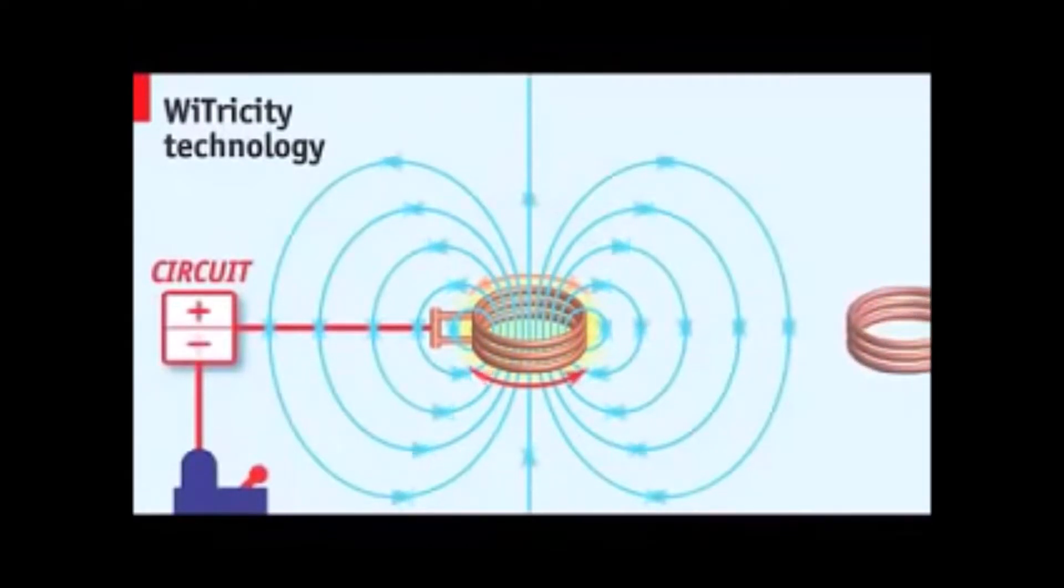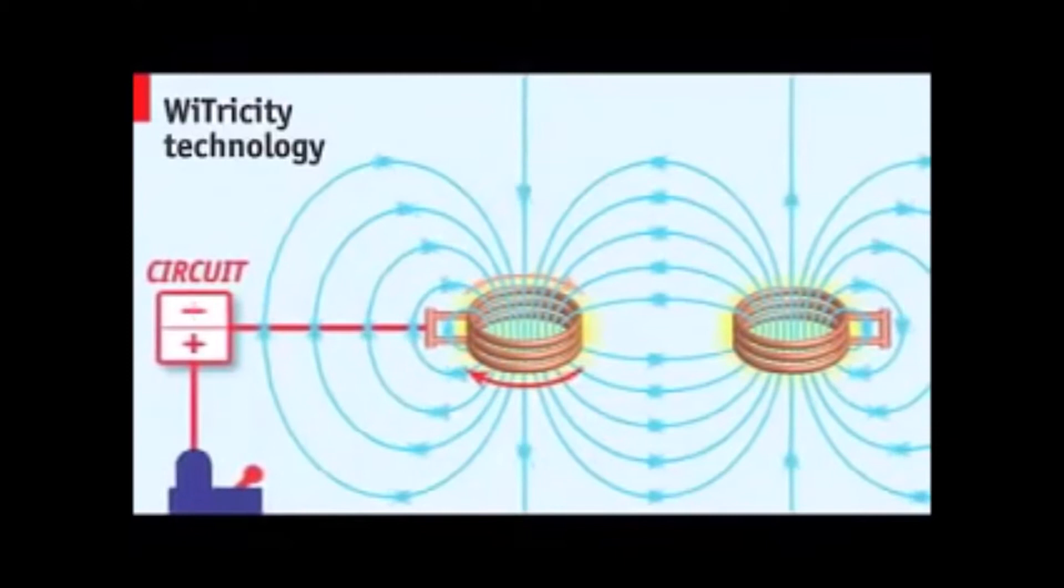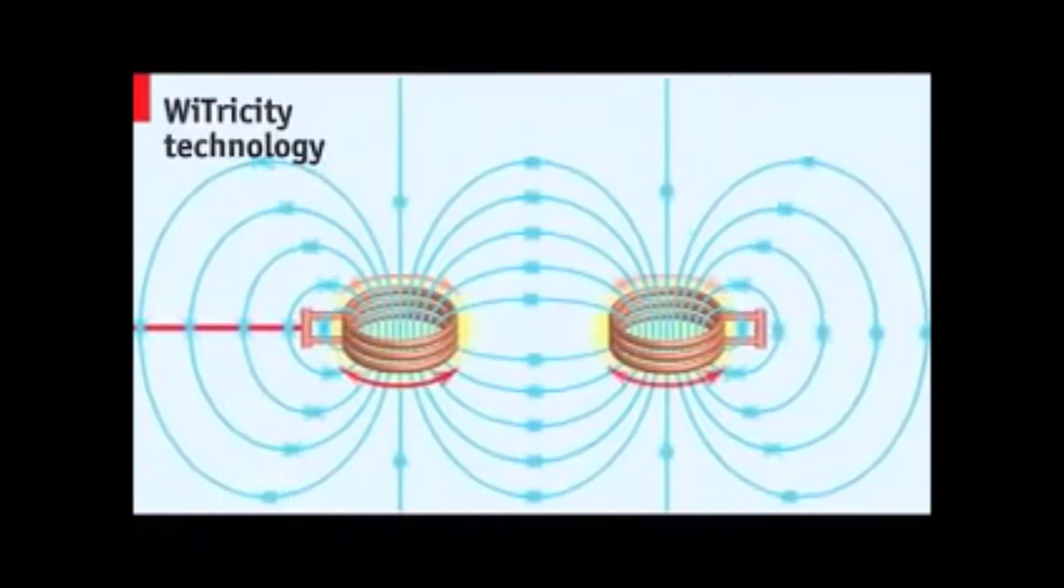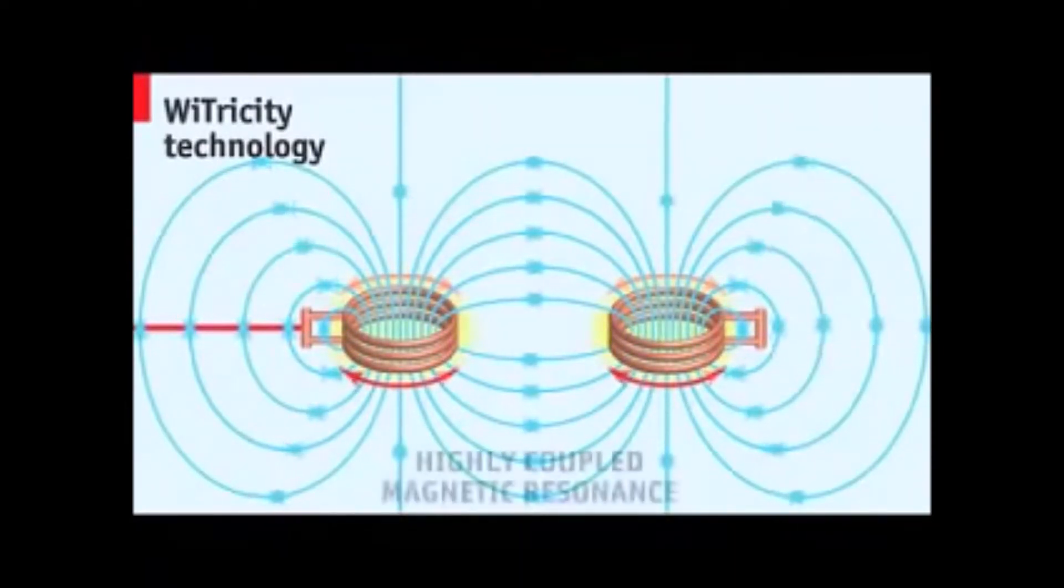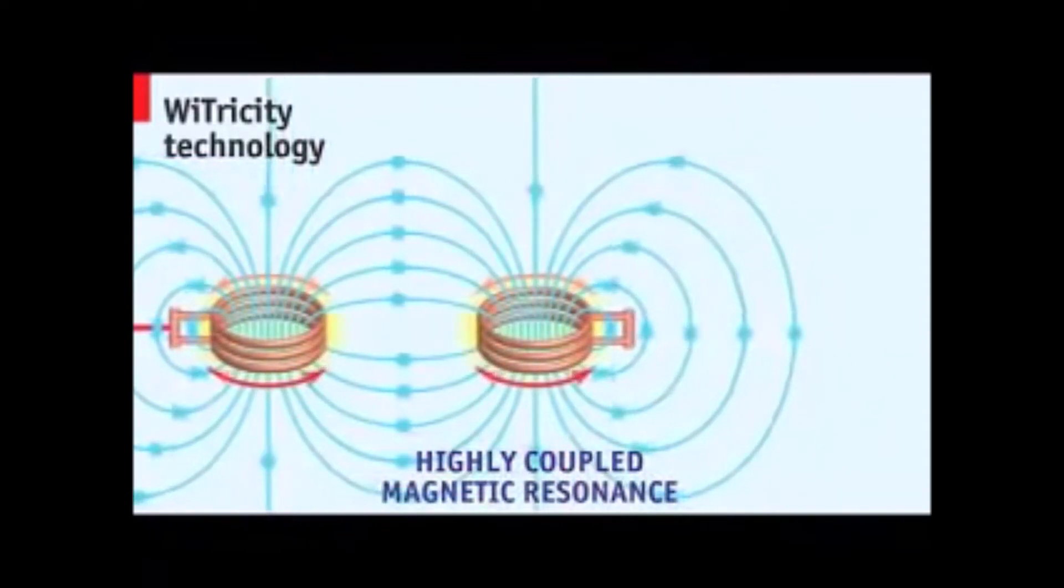Tune a second coil to the same resonant frequency as the source, and it will couple, resonating anywhere within that region and converting the oscillating magnetic field into an electrical current within the second coil. This response is called highly coupled magnetic resonance, and it hasn't been done before.